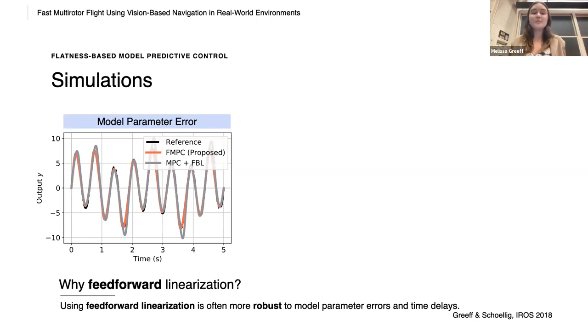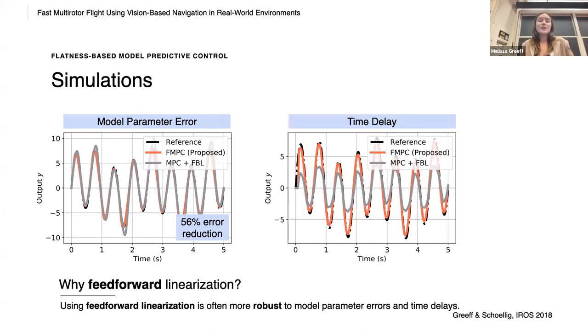So we look at a simulation example, and we want to track the reference in black. We compare the performance when using feed-forward linearization and model predictive control, that's FMPC in red, and feedback linearization and model predictive control in gray. In this case, with the model parameter error, we've got a 56% error reduction simply using feed-forward linearization. We also look at the case where there is an input time delay and see a 70% error reduction.